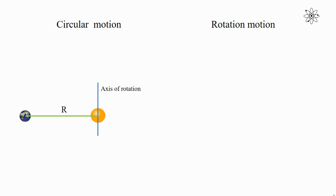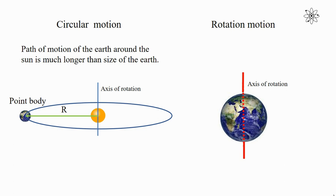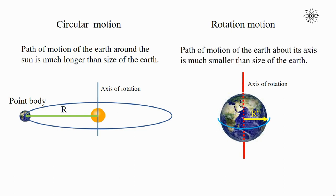The distance between the sun and earth is very, very large. So when we compare the path of motion of the earth around the sun, which is much, much longer than the size of the earth, the earth acts as a point body during circular motion. When we consider the rotational motion of the earth and compare its size with its path of motion, the path of motion of the earth about its axis is much smaller than the size of the earth. Therefore, the earth in this case acts as an extended body.